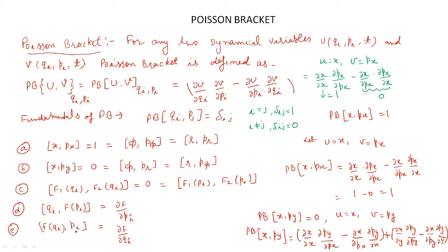Now we can prove that {x, py} = 0. Let u = x and v = py. The Poisson bracket expands as (del x / del x)(del py / del px) minus (del x / del px)(del py / del x) plus (del x / del py)(del py / del py) minus (del x / del py)(del py / del y). All these quantities equal 0, confirming that {x, py} = 0.